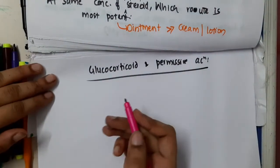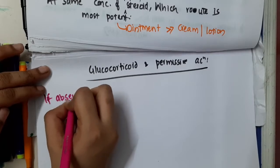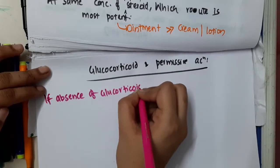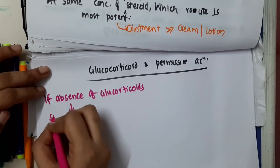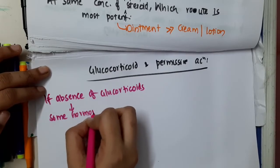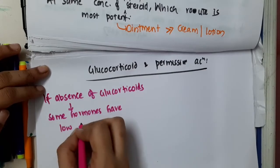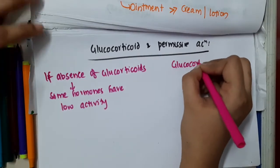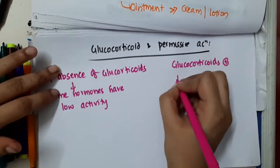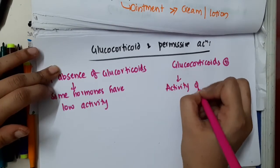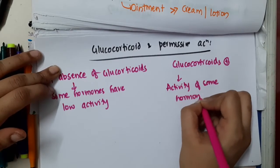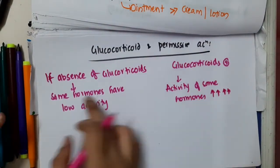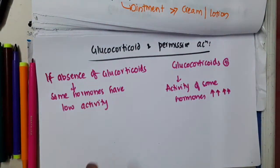What is permissive action? If glucocorticoids are absent, then some hormones will have low activity. But if glucocorticoids are present, the activity of those same hormones will increase many more folds. So the action of these hormones mainly depends upon glucocorticoids — that is permissive action.